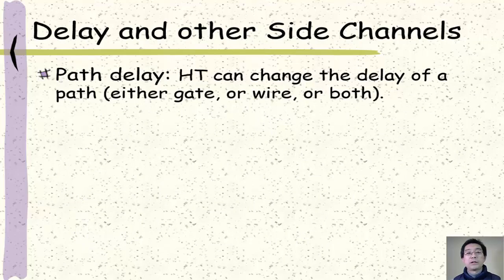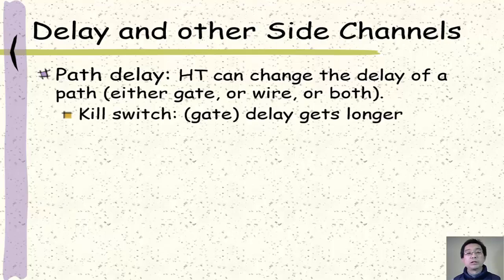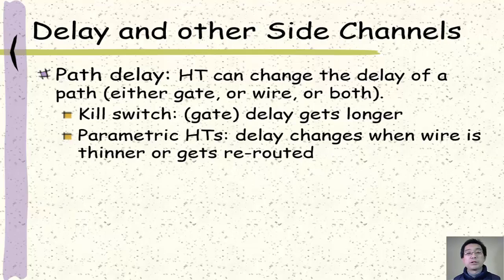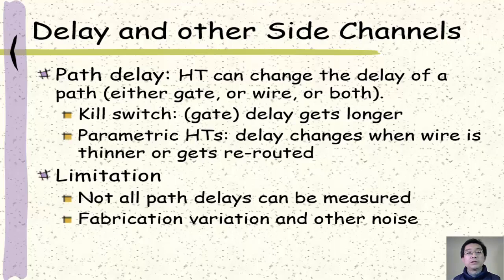Another side channel is the timing channel. Hardware trojans can change the delay of a path. For example, in the case of a kill switch, the added logic gate will make the path longer. In parametric hardware trojans, changes to wires or transistors may change the delay as well. The limitation of path delay based hardware trojan detection is that not all paths can have their delay measured. To measure the delay of a path, we need to be able to observe both the starting gate and the ending gate. Also, path delay measurement is very sensitive to fabrication variation and other noise.